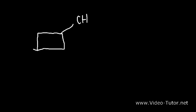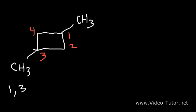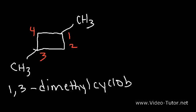Try this one. There are four carbon atoms in the ring, so the parent name is cyclobutane. We have a methyl on carbon one and on carbon three, so this is going to be called 1,3-dimethylcyclobutane — using a comma to separate the numbers and 'di' since we have two methyl substituents.